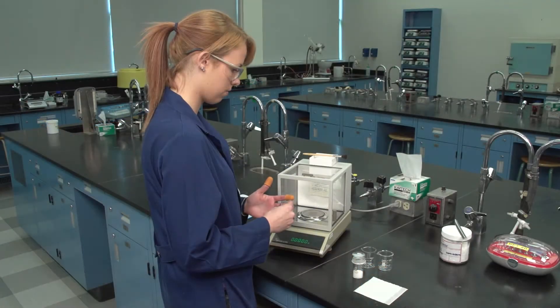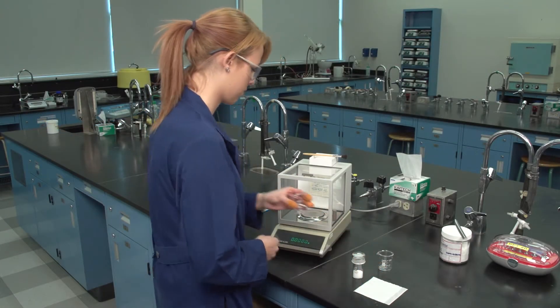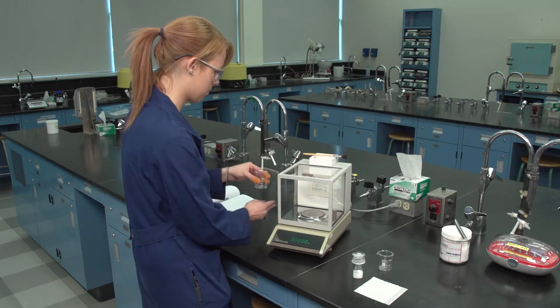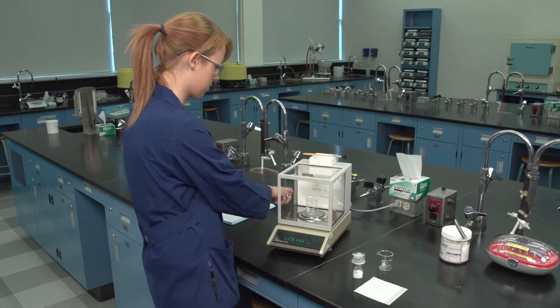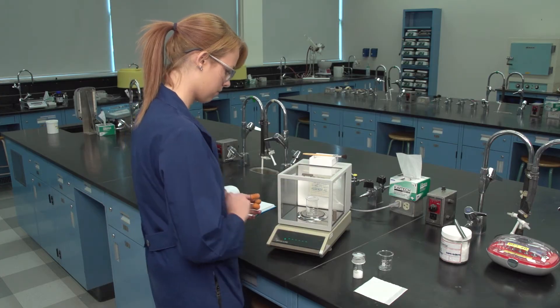Without touching with bare hands and using finger cots or lint-free tissue, place a clean, dry weighing bottle or other suitable weighing container on the analytical balance. Close the compartment door. Press the tare bar.